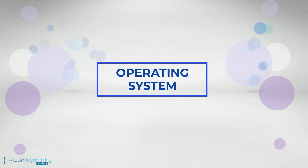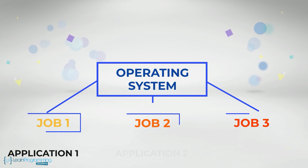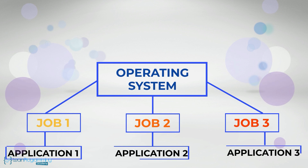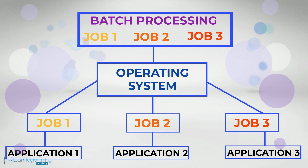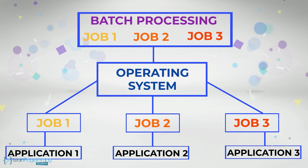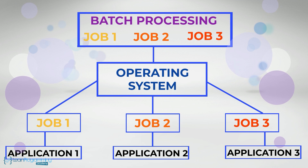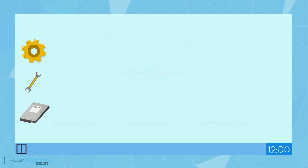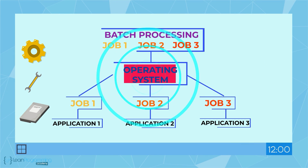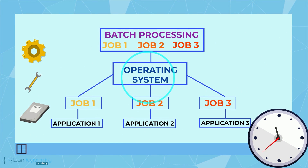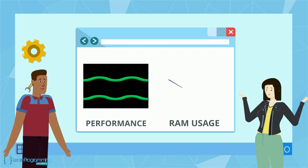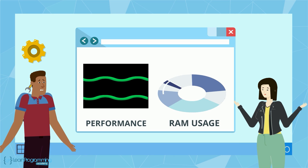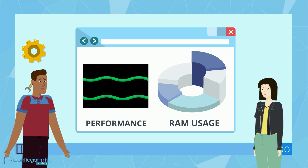Most operating systems chunk work into jobs based on the application software being executed. Some jobs are done in what is called batch processing, which requires very little if any end-user interaction. Today many of these jobs run in the background throughout the day or night, and we rarely know they exist except for the amount of RAM they consume or the impact they have on the computer's performance.